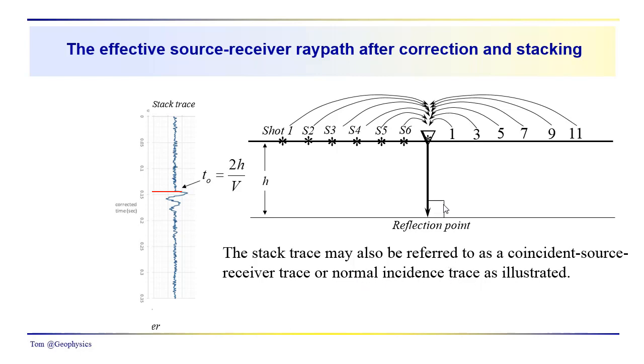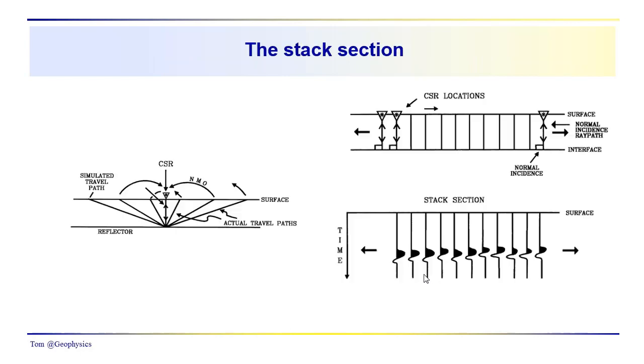Sometimes this stack trace can be referred to as a coincident source receiver trace or a normal incidence trace, in the sense that the sources and receivers are right on top of each other effectively. The data has been processed so that we are looking only at normal incidence reflection events.